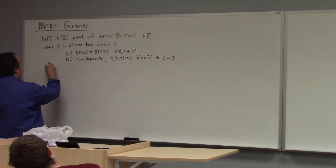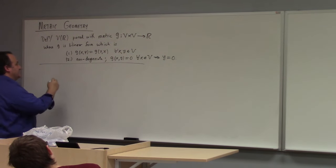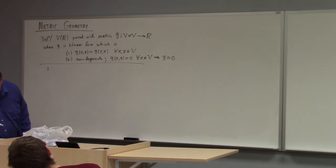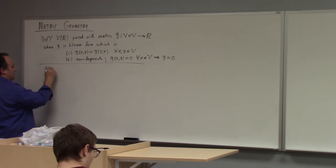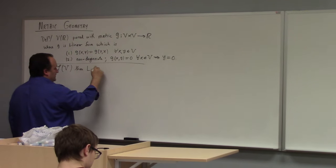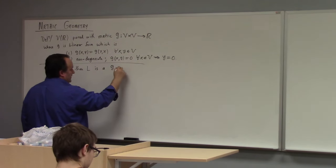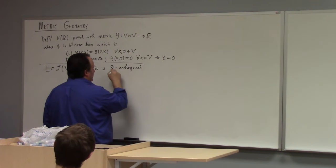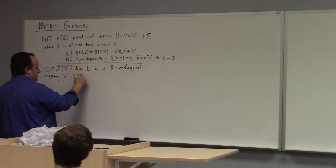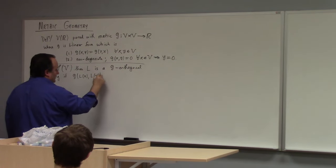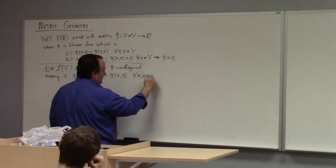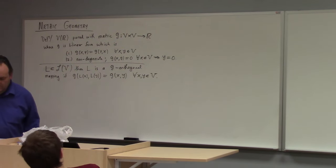We also made a further definition: if we have L, a linear transformation on the vector space, then L is a G-orthogonal mapping if G(L(x), L(y)) = G(x, y) for all x and y in V. So that's a G-orthogonal mapping.